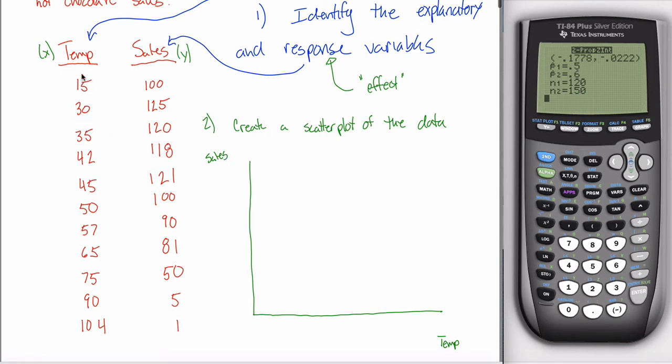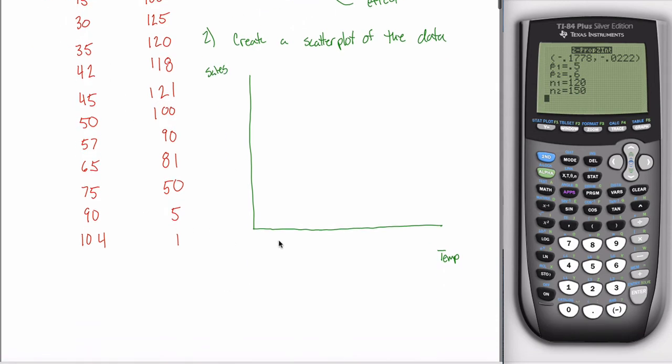And then you can look at the temperature, and it looks like it goes from 15 to 105. So maybe a scale of 10 would make sense. 10, 20, 30, 40, 50, 60, 70, 80, 90, 100, 110. Sure.